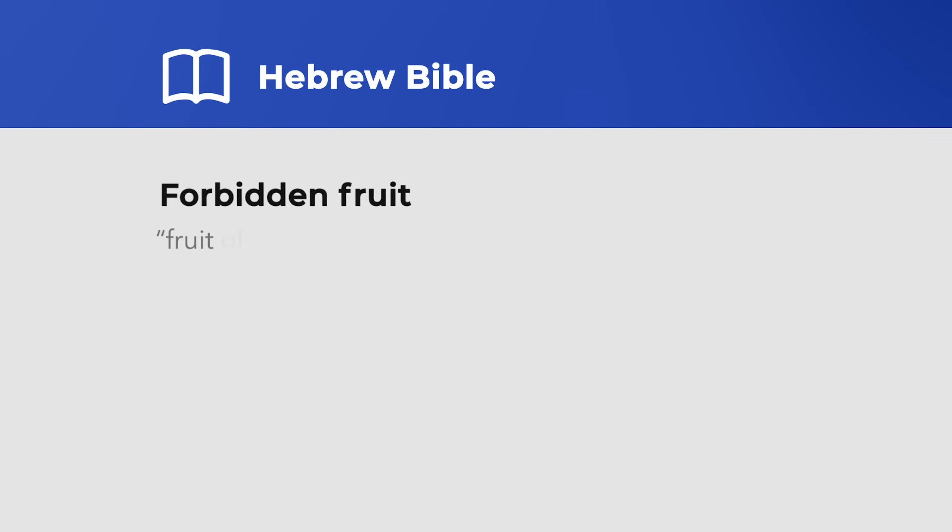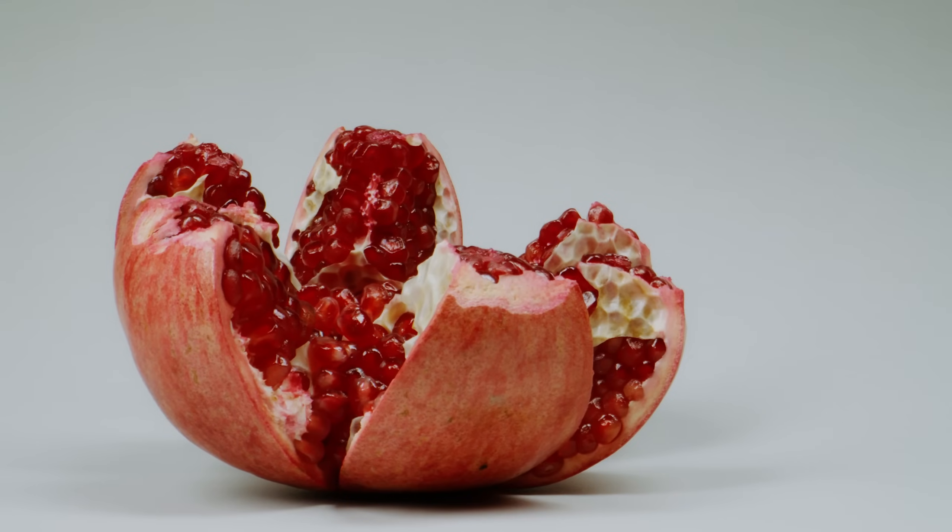We can't know what fruit the author of Genesis 2–3 wanted their readers to imagine, but we can say it probably wasn't an apple — there's little evidence that apples were widely available in ancient Palestine. It probably also wasn't a grape, as the forbidden fruit is referred to as the fruit of the tree or wood, while grapes are referred to in the Hebrew Bible as the fruit of the vine. If the author was imagining a specific fruit, then something like a fig or a pomegranate, or even some unknown fruit that is now extinct, seems a safer bet.